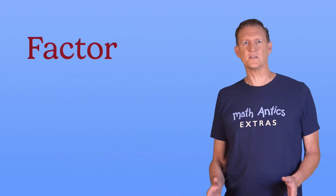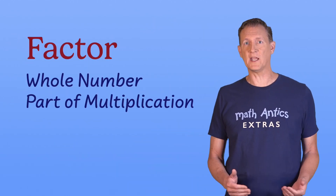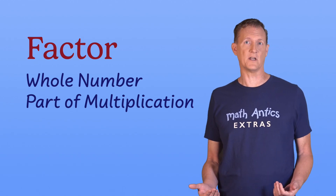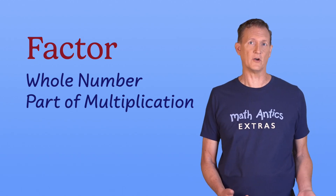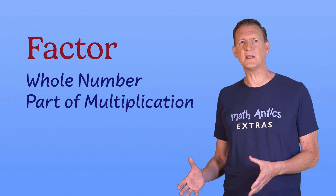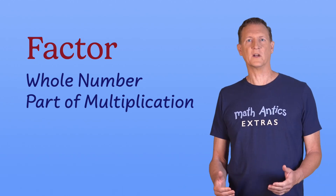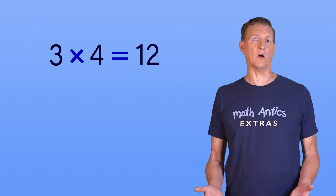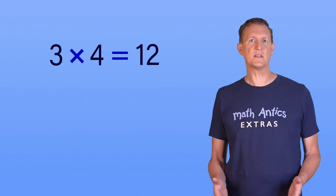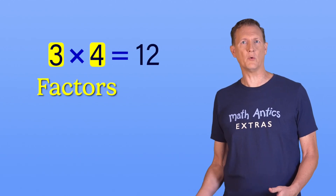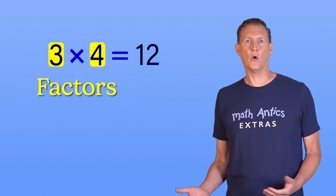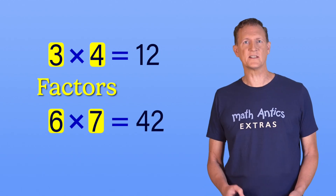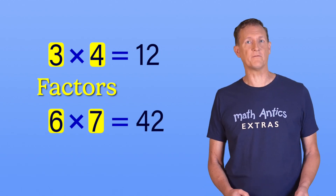A factor is a whole number that's part of a multiplication problem. If you ask what factors does a number have, you're asking what numbers could you multiply together to get that number. For example, if you multiply 3 and 4 together, you get 12 — that means that both 3 and 4 are factors of 12. Or if you multiply 6 and 7 together, you get 42, so 6 and 7 are factors of 42.